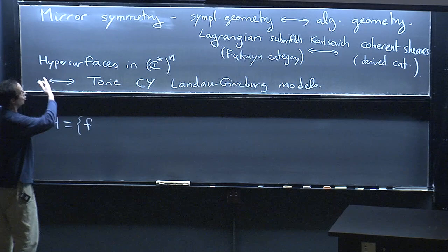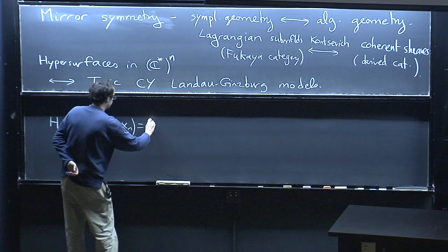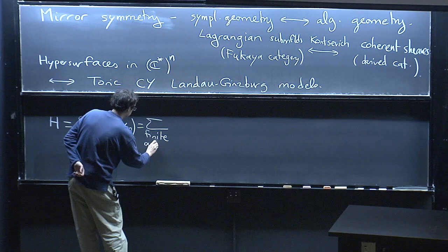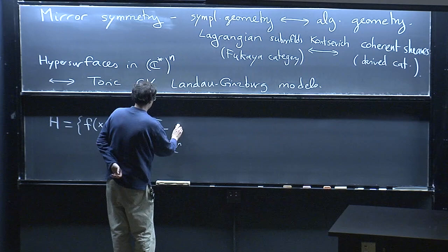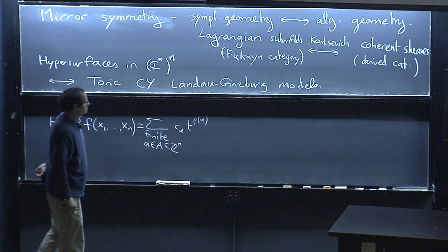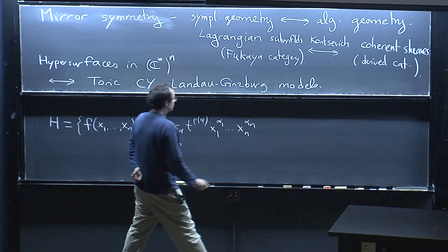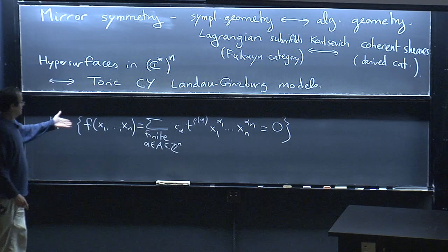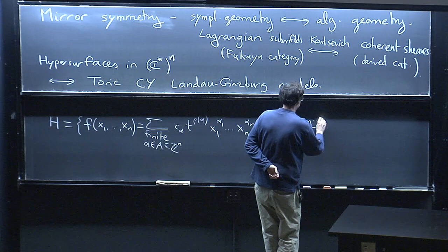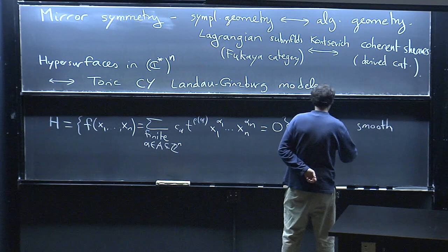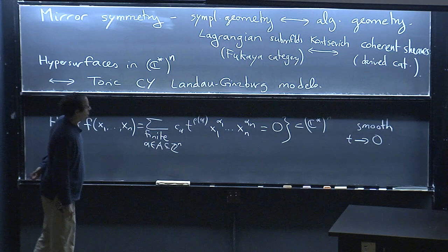Let's say I have a hypersurface defined by some Laurent polynomial in n variables, which might be a finite sum over a set of weights — a finite subset of Z^n — of some coefficients, some extra parameter t that I take powers of, and the monomials in variables x_1 to x_n. Setting this equal to zero defines a hypersurface in C* to the n, which we assume is smooth.